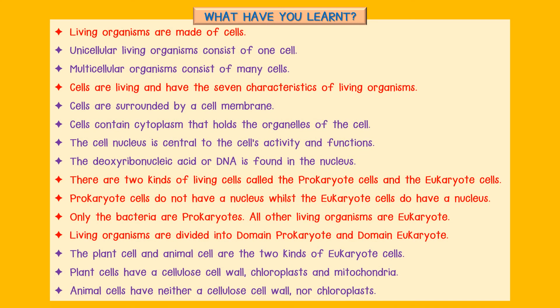Let us summarize what you have learnt. Living organisms are made of cells. Unicellular living organisms consist of one cell; multicellular organisms consist of many cells. Cells are living and have the seven characteristics of living organisms. Cells are surrounded by a cell membrane and contain cytoplasm that holds the organelles. The cell nucleus is central to the cell's activity and functions. The deoxyribonucleic acid, or DNA, is found in the nucleus. There are two kinds of living cells: prokaryote cells and eukaryote cells. Prokaryote cells do not have a nucleus, whilst eukaryote cells do. Only the bacteria are prokaryote; all other living organisms are eukaryote.